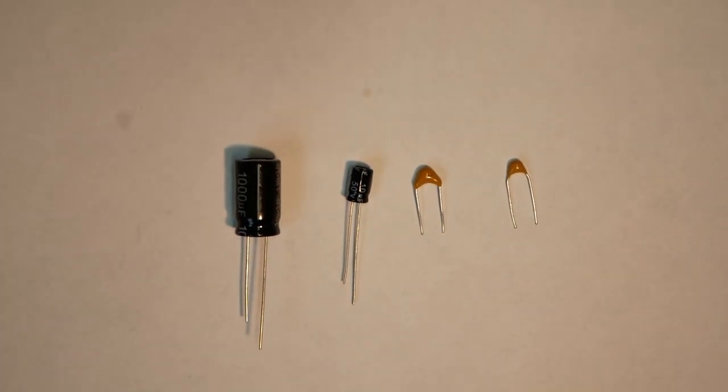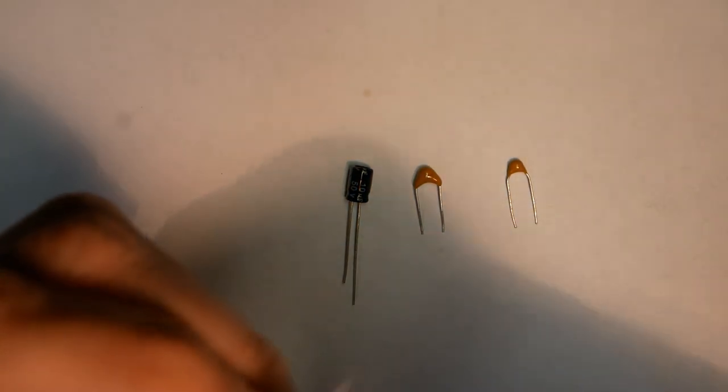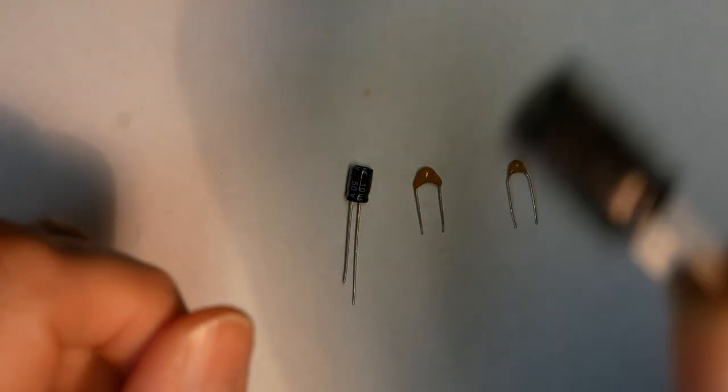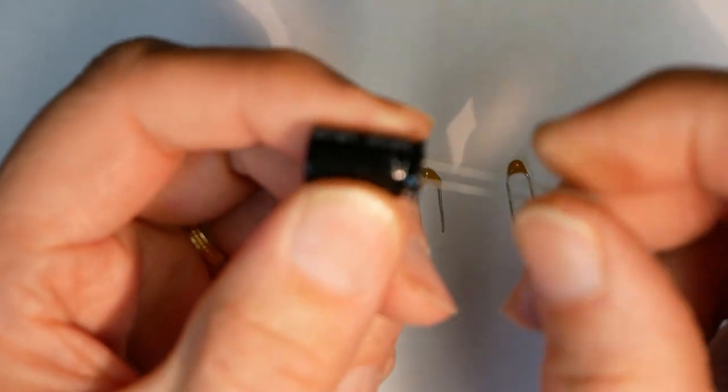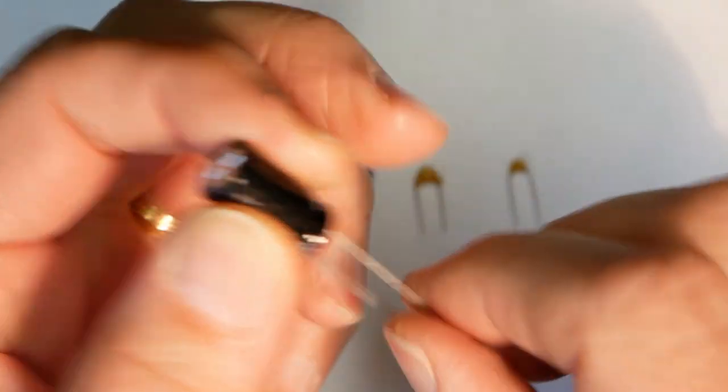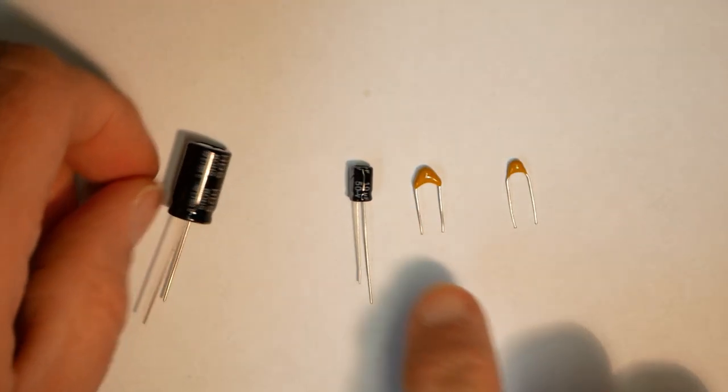Here we can see some of the more typical types of capacitors you might find on a breadboard. We have electrolytic capacitors, something like this. You can also have these where the leads come out from each end.